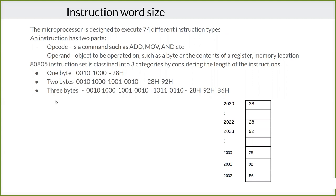Any instruction consists of mainly two parts: one is the opcode and another one is the operand. The opcode says what has to be done — for example, addition, moving values from one register to another register or from memory location to registers, logical operations, and all those things. Any operation is said to be the opcode.